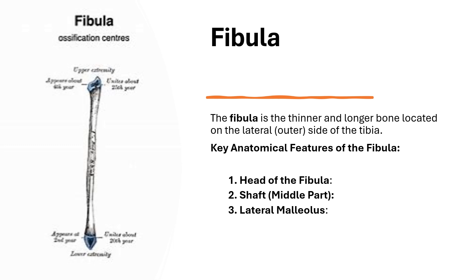At the distal end — the lower part — we have the lateral malleolus. The lower end of the fibula forms the lateral malleolus, which can be felt as the bony prominence on the outer side of the ankle. The lateral malleolus is essential for stabilizing the ankle joint and prevents excessive inward — inversion — movement of the foot. While the fibula is not a major weight-bearing bone, it maintains the structural integrity of the lower leg and ankle, providing ligament attachments that aid balance and coordination during walking or running.